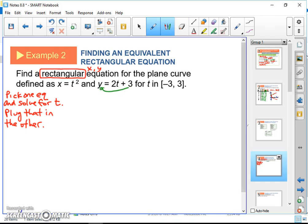I'm going to subtract that 3 over. 2T equals Y minus 3. Divide by 2. T is going to equal Y minus 3 over 2.